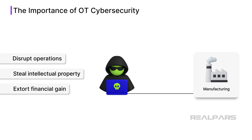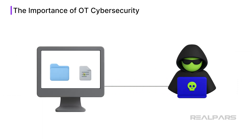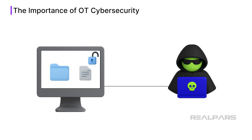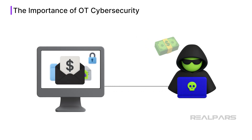In industrial environments, where availability and safety are top priorities, the impact of such breaches can be especially severe. An example is the use of phishing emails to trick the user into clicking a link that installs a ransomware virus that locks up the user's computer until a monetary payment is made.